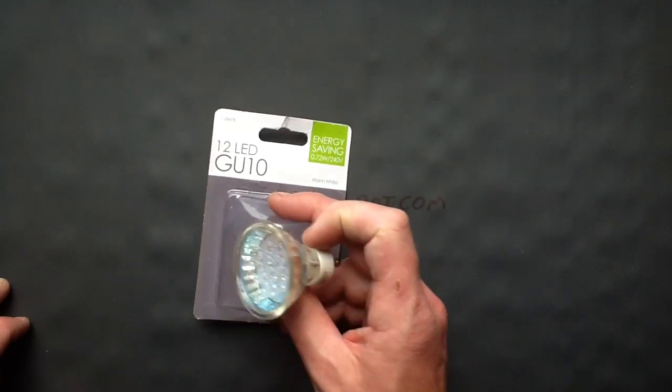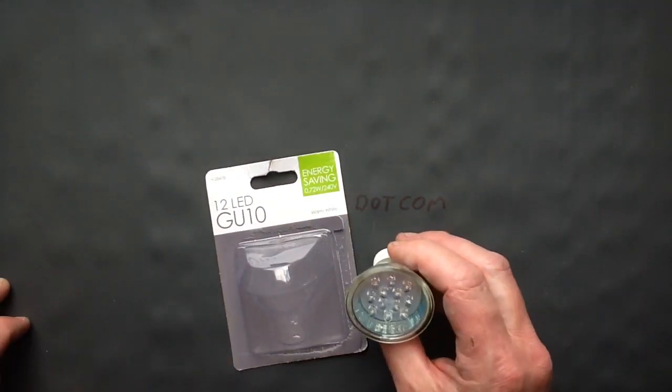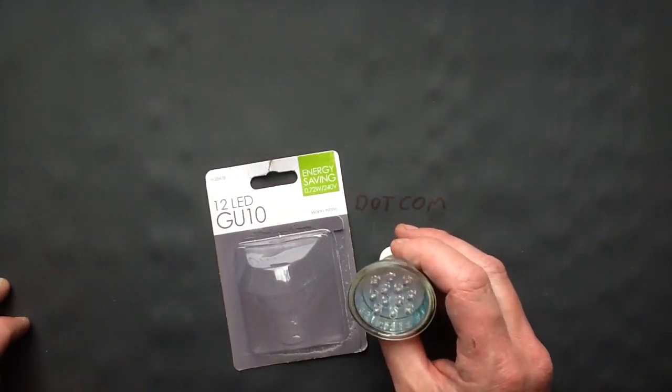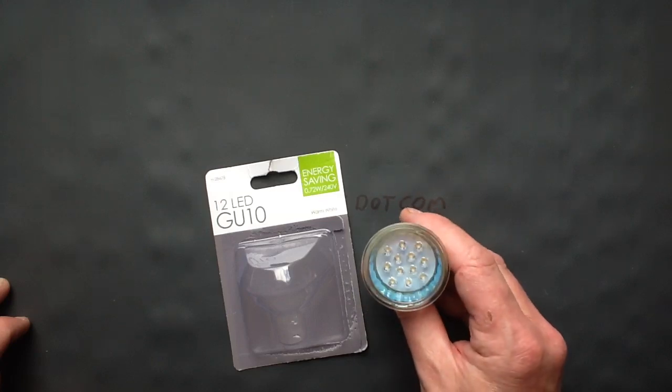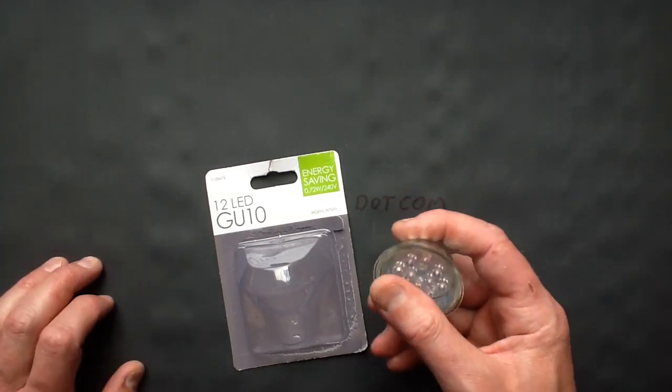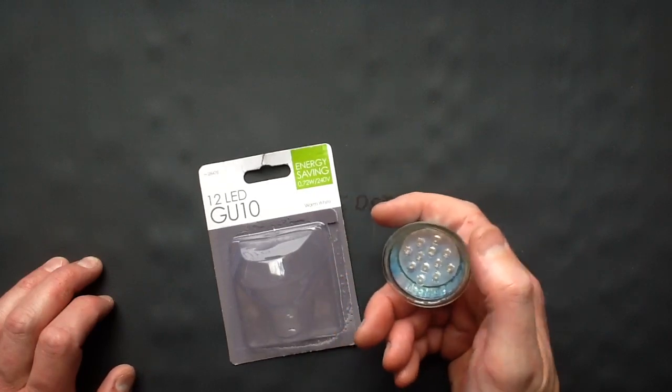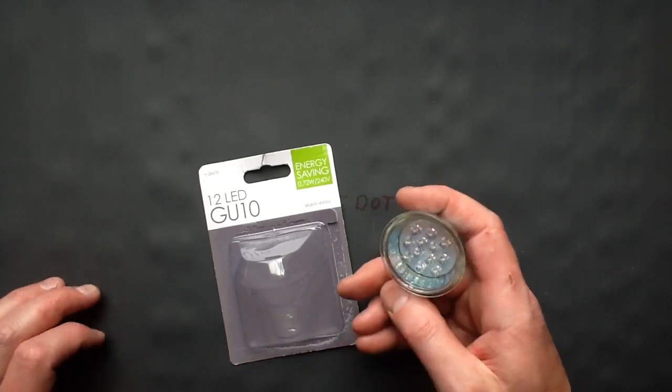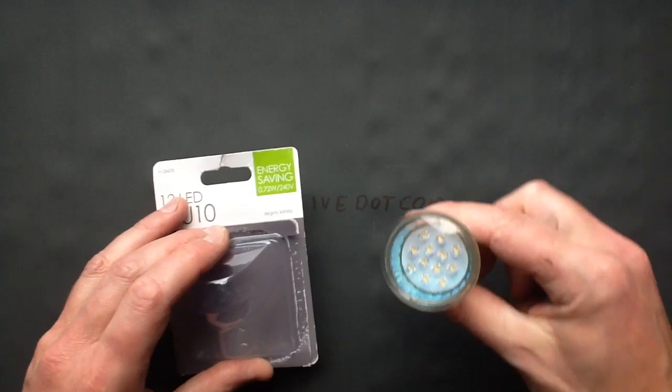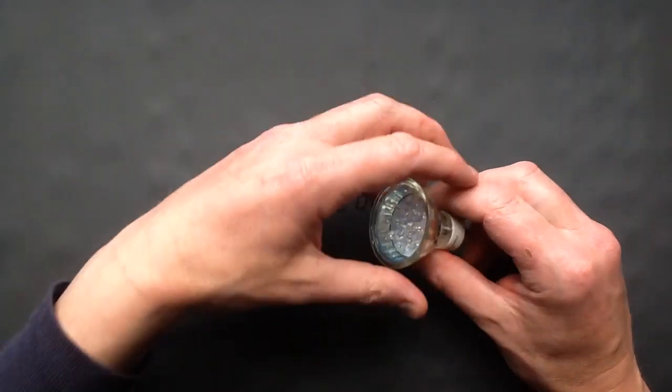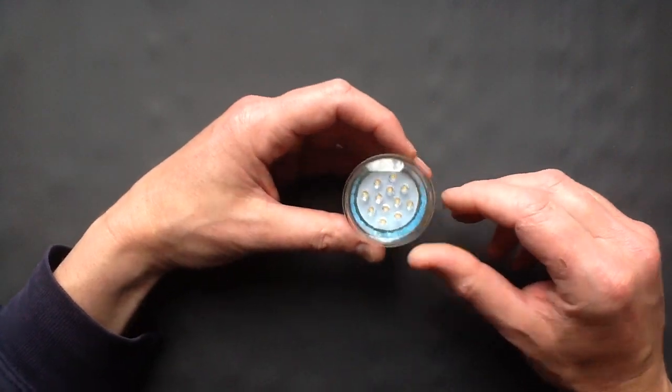One of them is their LED GU10 lamp. They've not got quite as far as Poundland in offering the 3 watt type version, but they've got this standard 12 LED warm white version. And like most of these glass GU10 lamps, it's very hard to open without smashing everything to bits.